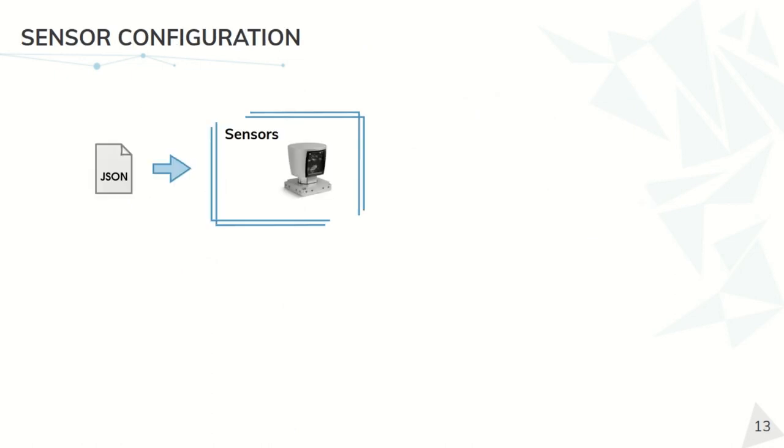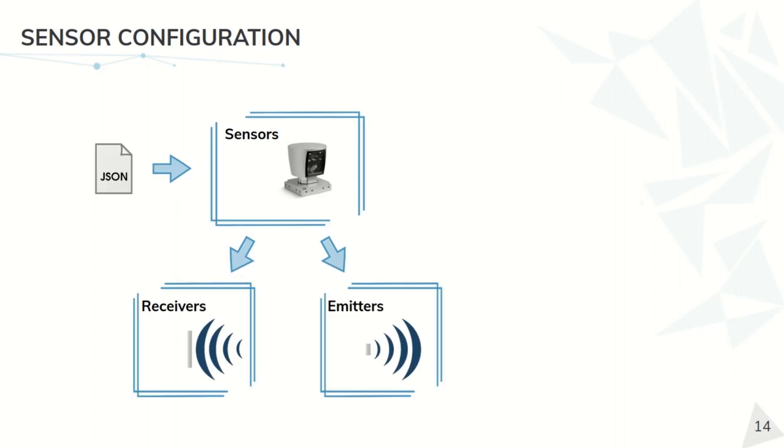As we commented in the previous slide, we can define our own sensors. They can be done using a simple configuration file, in which we can specify all its important features. For example, the number of receivers and emitters, and the geometry of them.